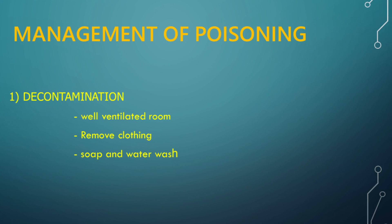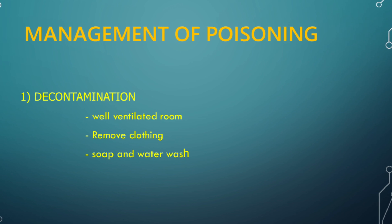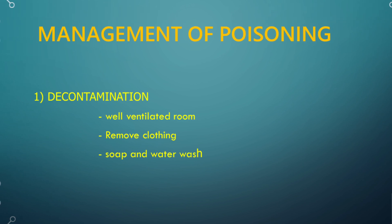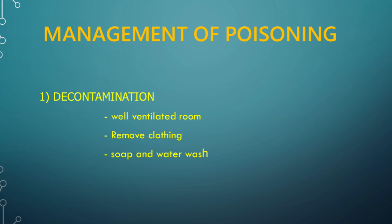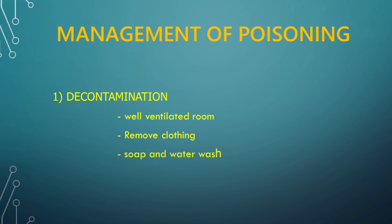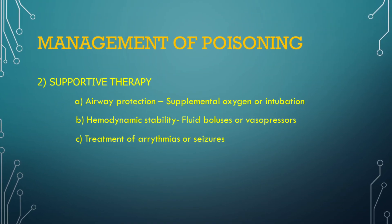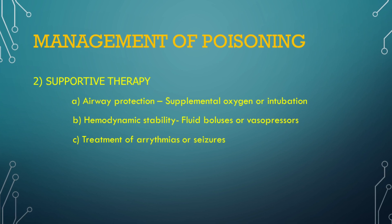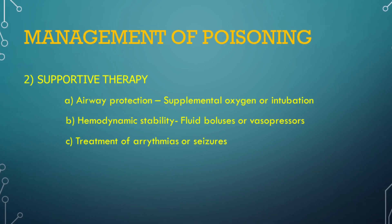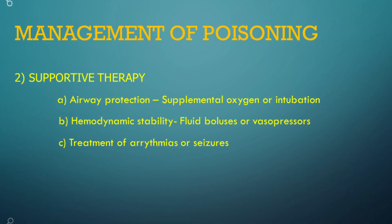Coming to the management of OP poisoning. The first and foremost step is decontamination — take the patient to a well-ventilated room, remove all clothing, and give a thorough soap and water wash. Gastric decontamination has no role in organophosphate poisoning. Our priority should be airway and hemodynamic control. Airway protection by supplemental oxygen or securing the airway with intubation. Hemodynamic stability should be assured by intravenous fluid boluses or vasopressors, and treatment of arrhythmia or seizures if present.